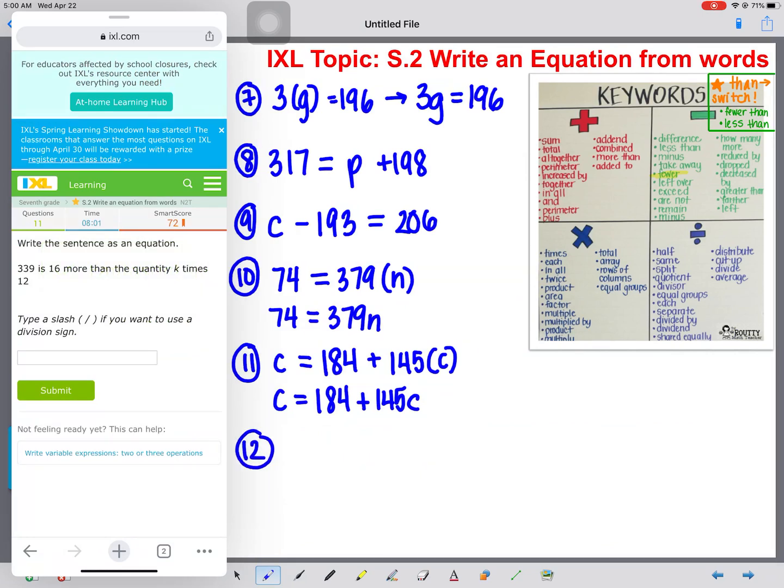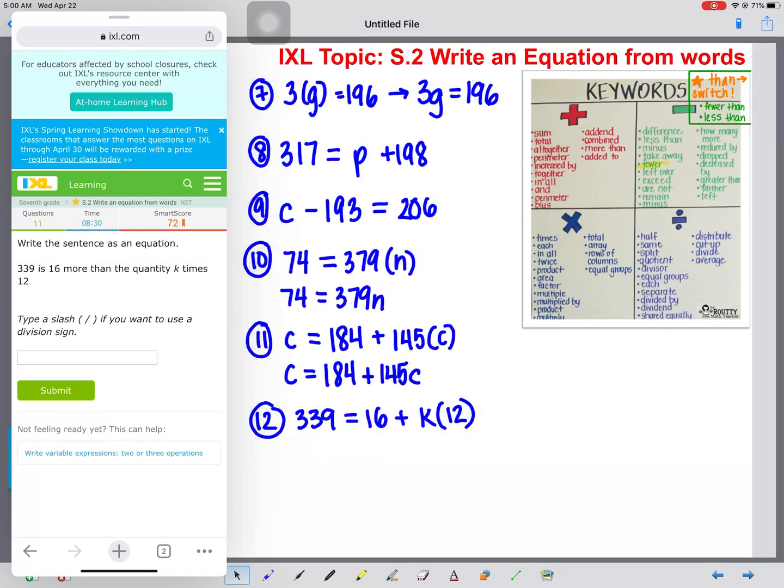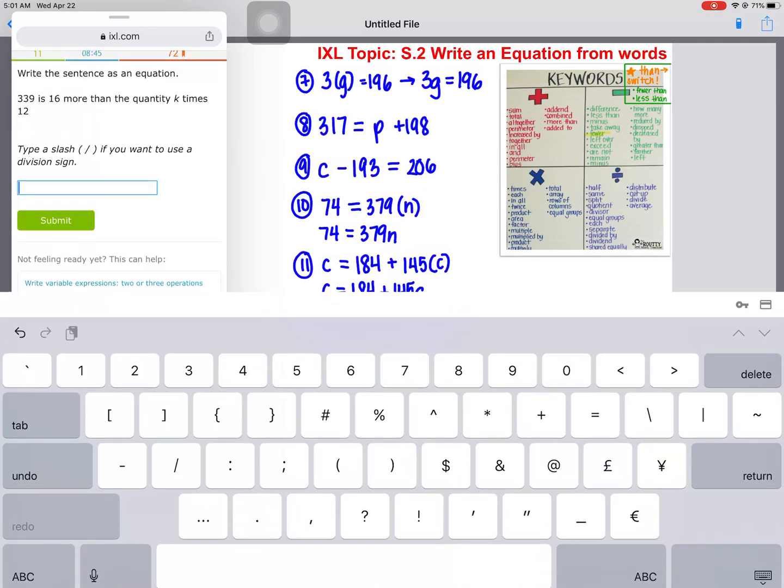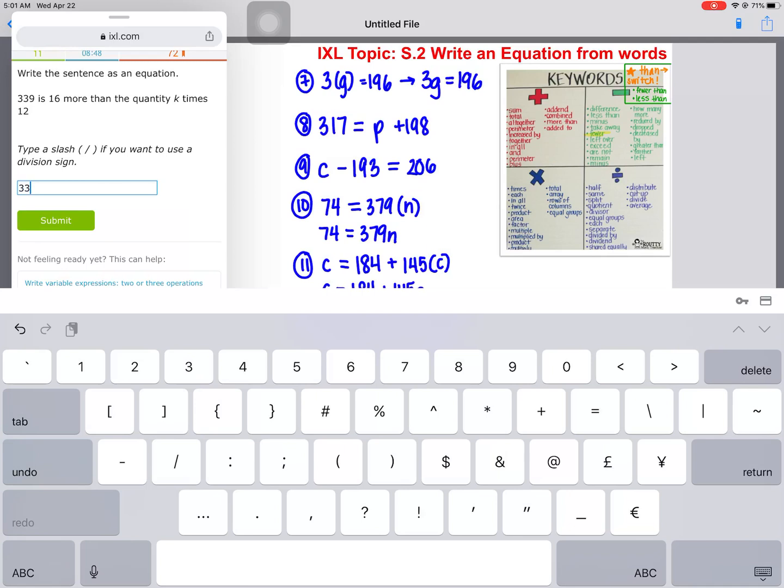Okay, number 12. 339 is 16 more than the quantity K times 12. Ooh, they're getting harder. I love it. So we have 339 equals 16 more than, so 16 plus the quantity K times 12. Alright, so look at what's going to happen here. We are going to rewrite this as 339 equals 16 plus 12K. Remember, we always want to put the number first and the variable second. So now we're going to type that in. 339 equals 16 plus 12K.